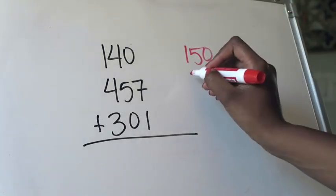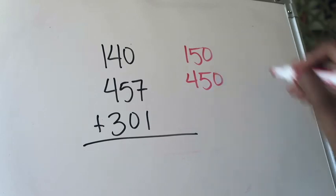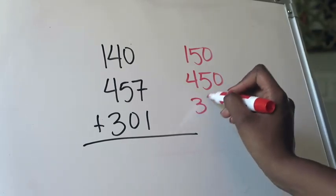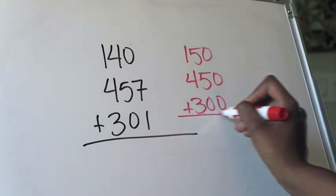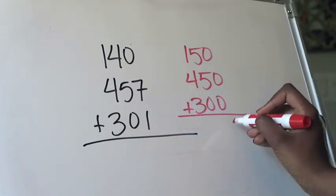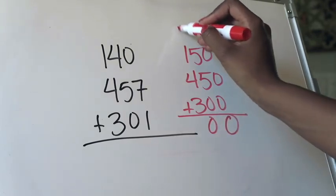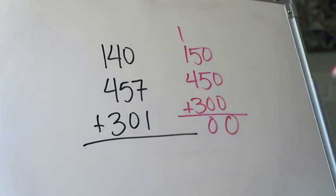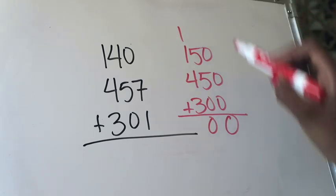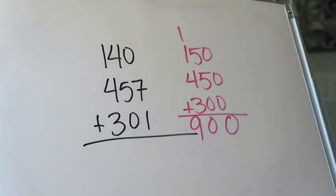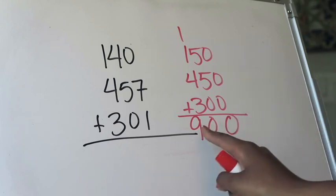457, I'm going to round that to 450, and 301, I'm just going to round that to 300. I'm going to add all these together. Zero plus zero plus zero is zero. Five plus five is 10, so I'm going to regroup that one up there. Three plus four is seven, plus one is eight, plus the regrouped one is nine. So this tells me that my real answer needs to be somewhere around 900.